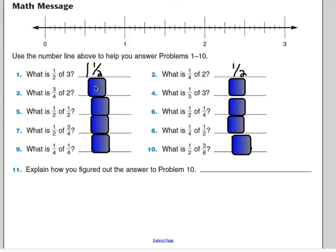Number three, what is three fourths of two? One and a half. Number four, one third of three would be one. Number five, half of half, one fourth.